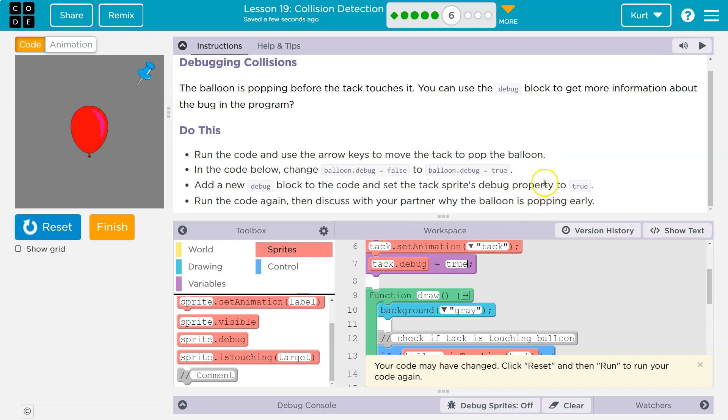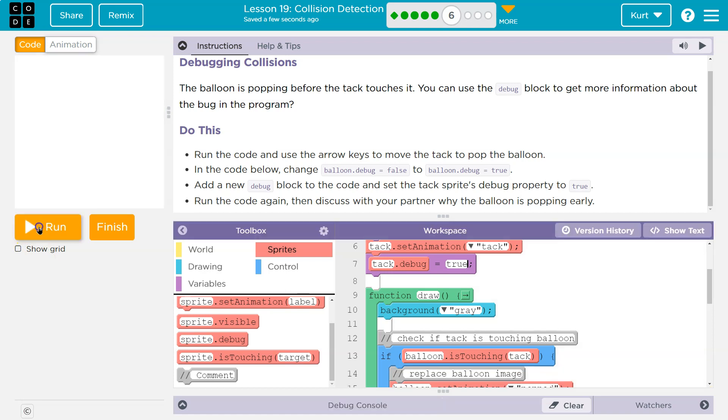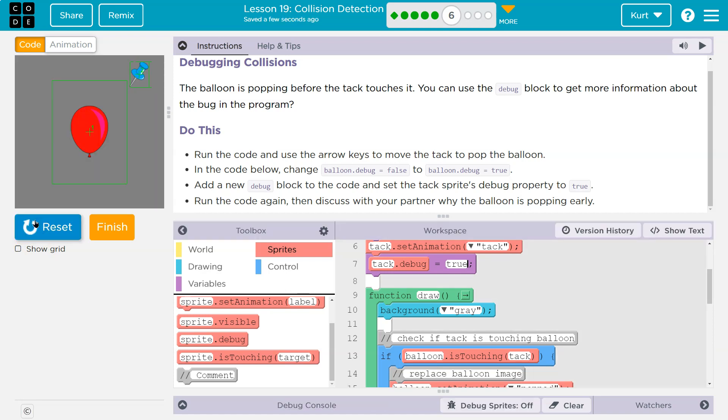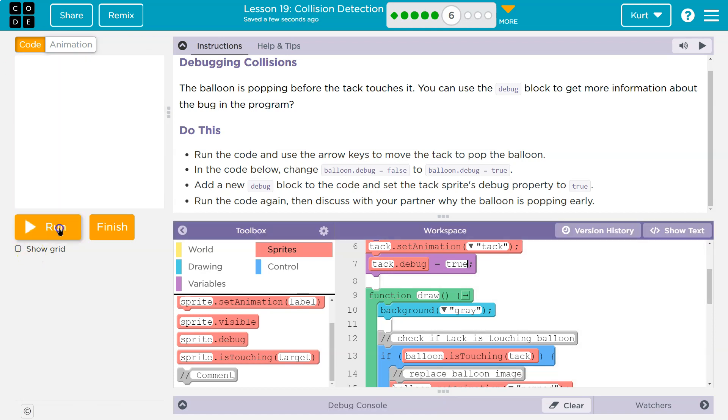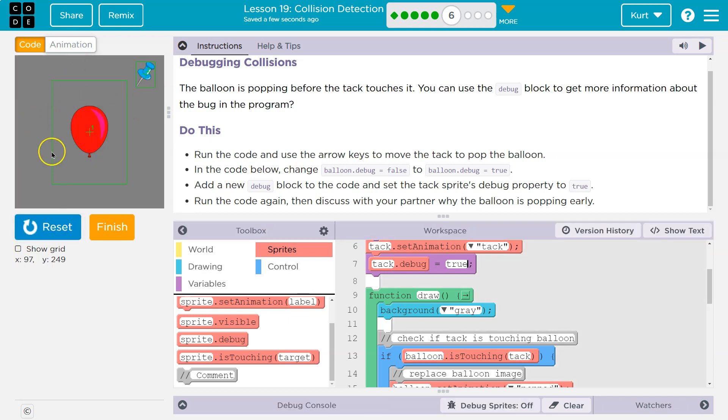Run the code again, discuss why the balloons popping early. Huh. Oh, do you see that? These green outlines are not the actual surface area. Interesting.